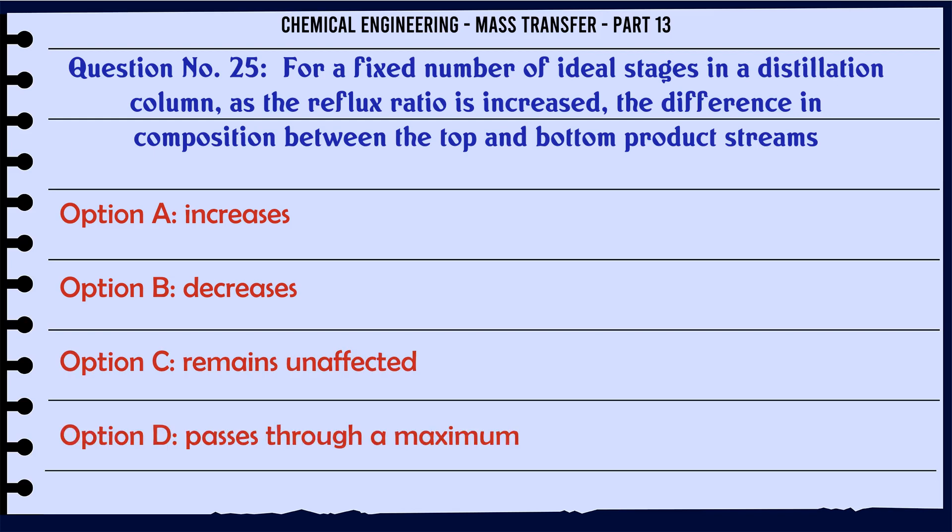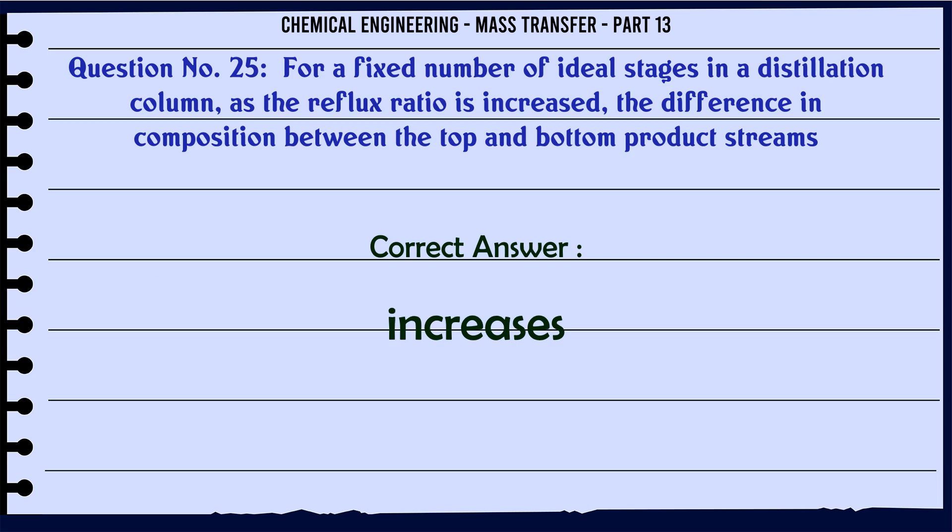For a fixed number of ideal stages in a distillation column, as the reflux ratio is increased, the difference in composition between the top and bottom product streams: A. Increases. B. Decreases. C. Remains unaffected. D. Passes through a maximum. The correct answer is: Increases.